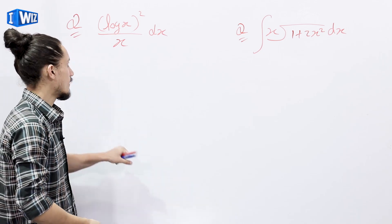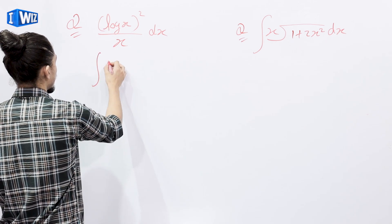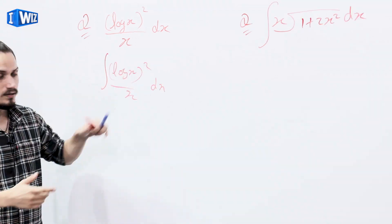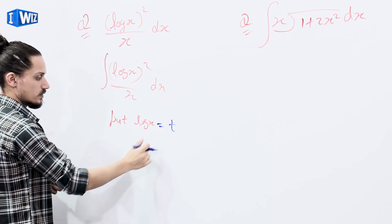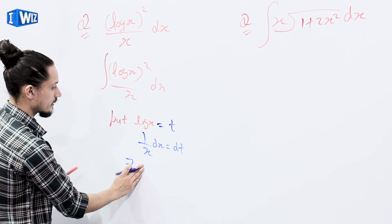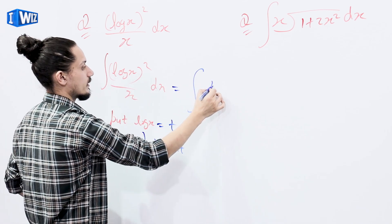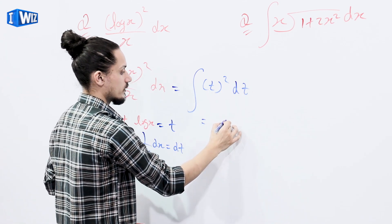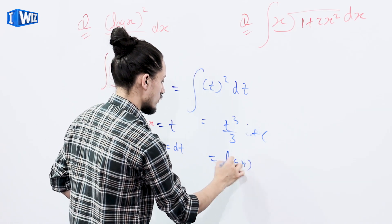For the first substitution example, we have to find the value of integral of (log x)²/x dx. We use substitution: put log x = t. Differentiating both sides gives (1/x) dx = dt. So x is already in the denominator — we can substitute directly. The integral becomes t² dt, which equals t³/3 + C. Substituting back t = log x, the result is (log x)³/3 + C.